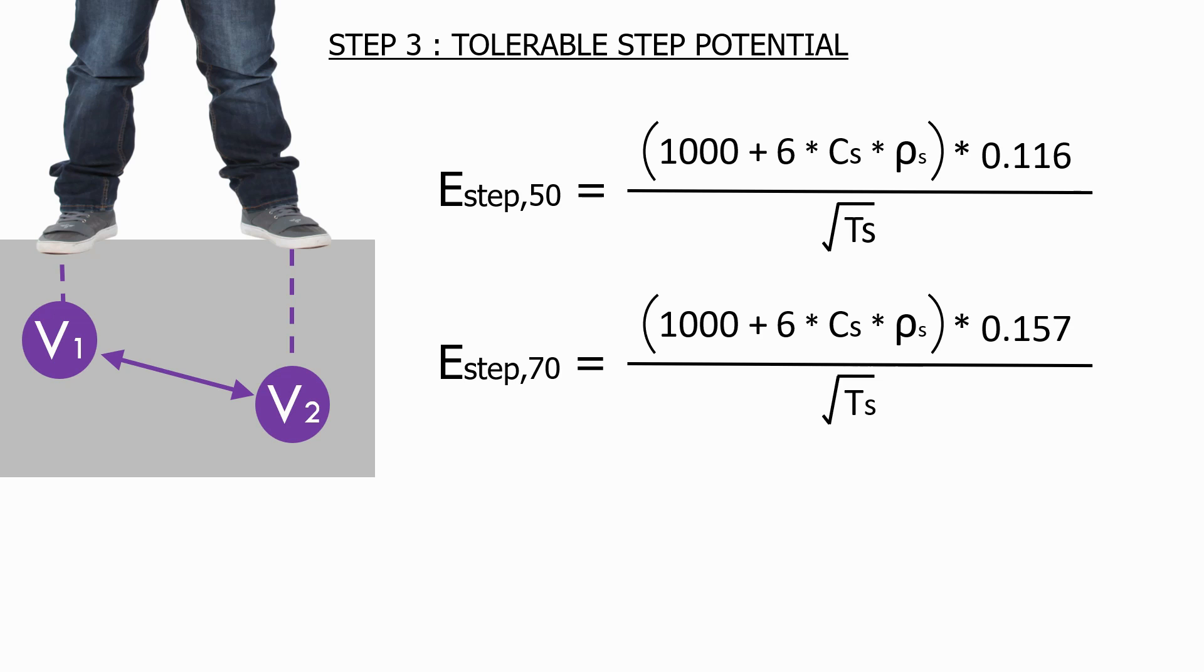As with the rest of the grounding system design, we always use the worst case scenario. So from this point forward, we will just use the step voltage calculation which is applicable for the 50 kg person.